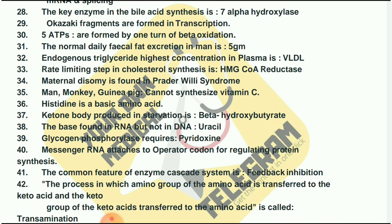Man, monkey, guinea pig cannot synthesize vitamin C. Histidine is a basic amino acid. The ketone body produced in starvation is beta-hydroxybutyrate. The base found in RNA but not in DNA is uracil. Glycogen phosphorylase requires pyridoxine.